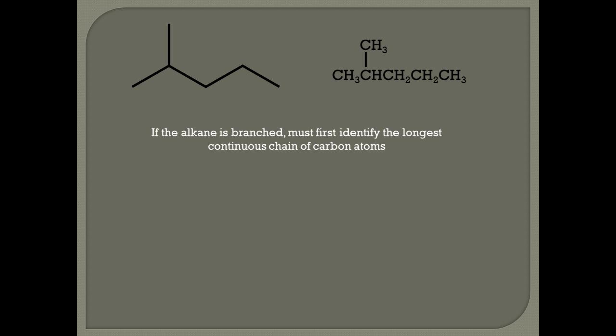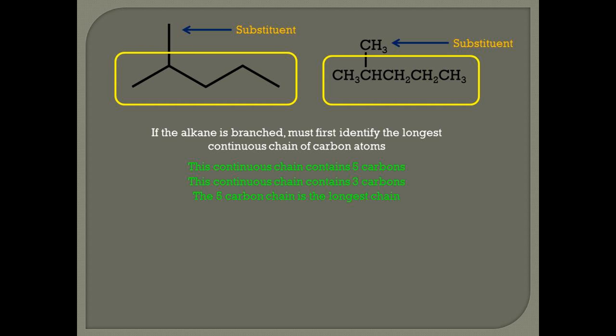Rule number two. If the alkane is branched, such as the one shown here, which consists of a chain and a substituent attached to that chain, we must first identify the longest continuous chain of carbon atoms — we have to find a chain that has the most number of carbon atoms in a row. If I look at this continuous chain, it contains five carbon atoms. On the other hand, this continuous chain contains three carbon atoms. The five-carbon chain is the longest, and therefore that's my longest continuous chain of carbons.